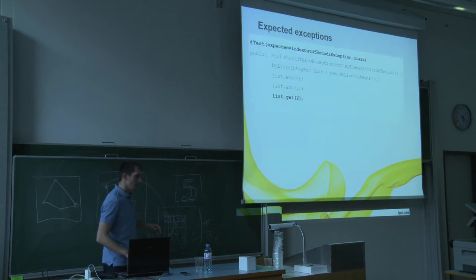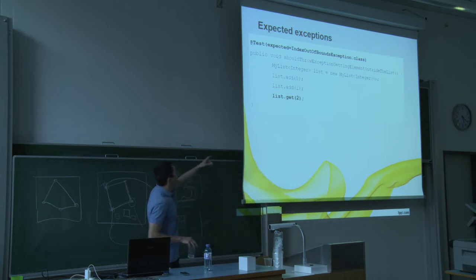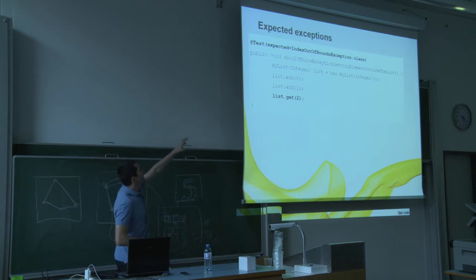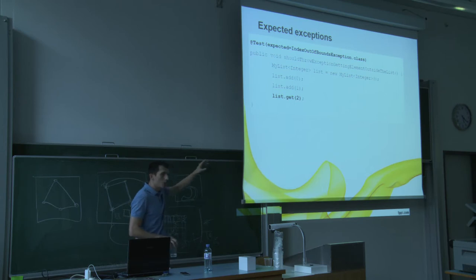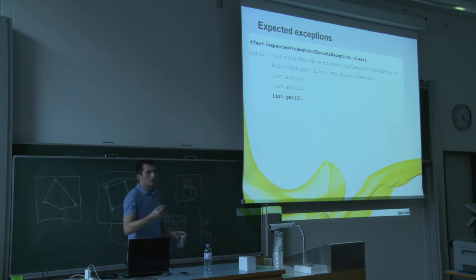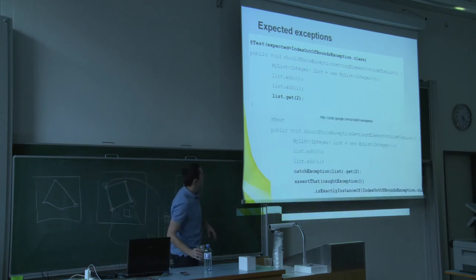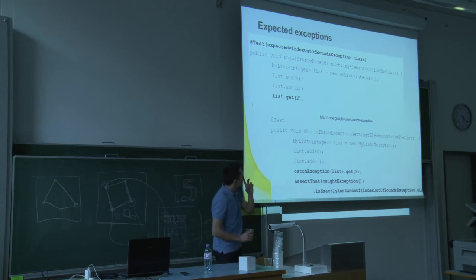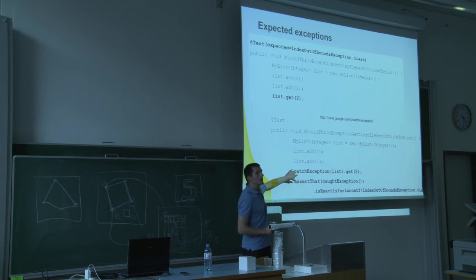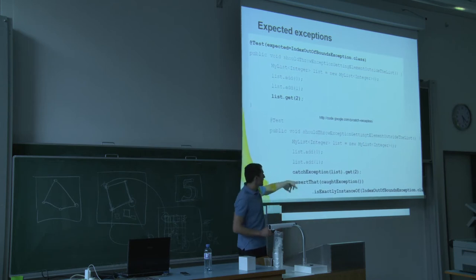Here comes the first one, but first an anti-pattern. This is taken from an online tutorial, meant to verify whether the last line throws an exception. Of course the test will still pass if the constructor dies with this exception too — this annotation doesn't care. There are better ways. There is the library catch-exception, which helps you tell exactly where you expect the exception. The other method is to put try-catch, but it looks ugly. With catch-exception it's much nicer, and then you have this assertion from AssertJ where you can say very precisely what you expect about the exception.